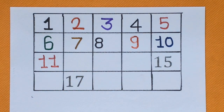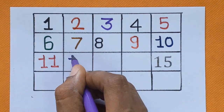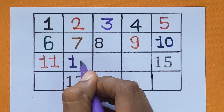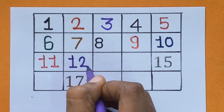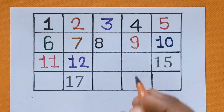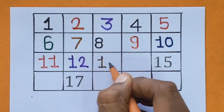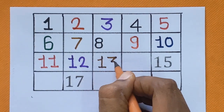Next is number 12. 1, 2 — 12. After number 12, the next number is number 13. 1, 3 — 13.